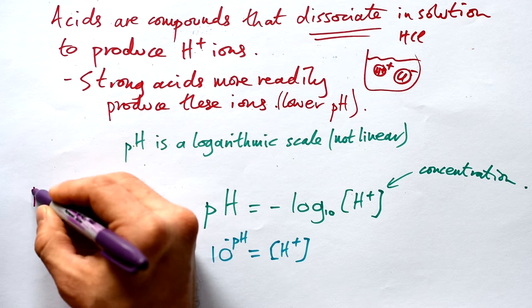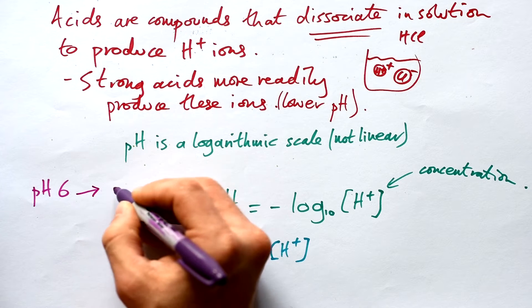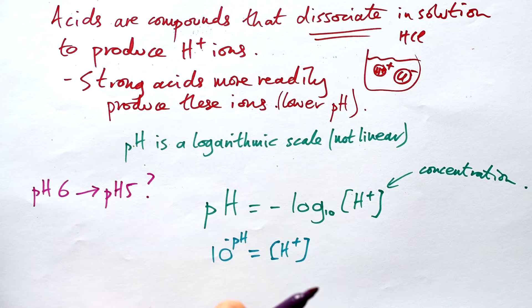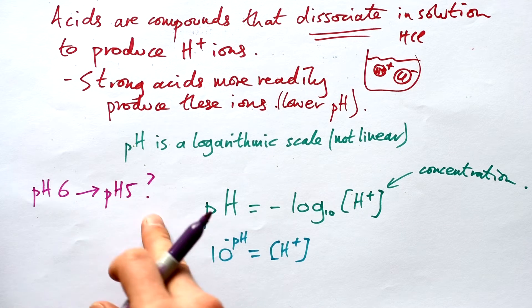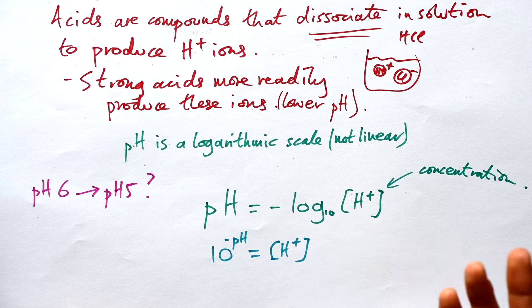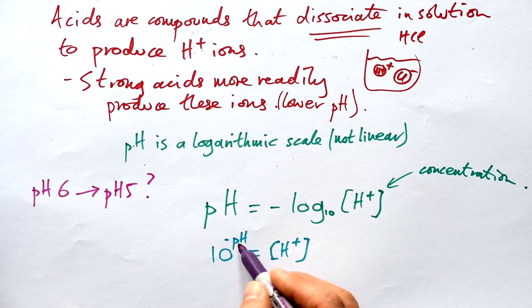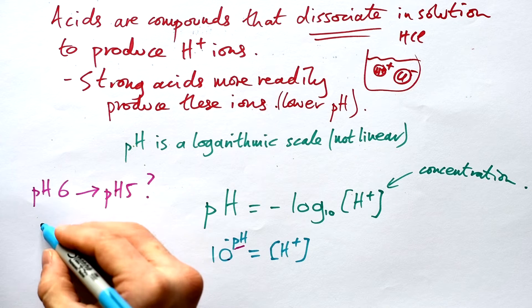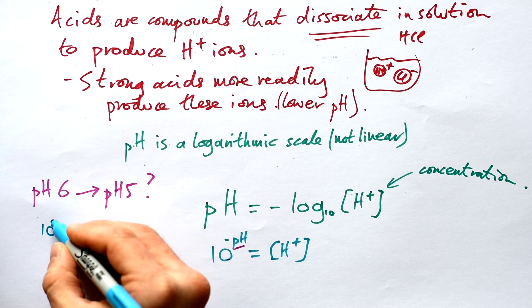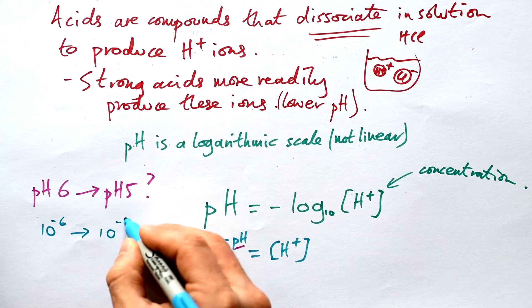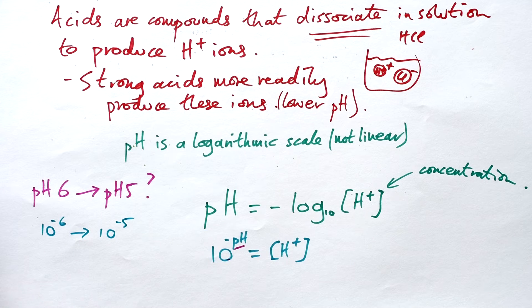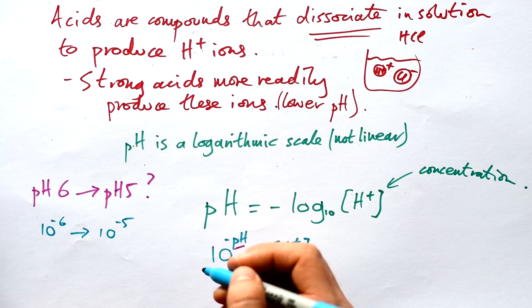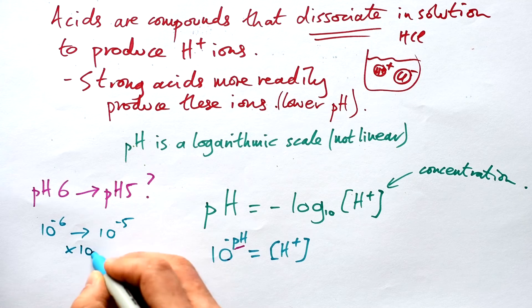What if we had something that was pH 6 and we wanted to make it pH 5? What would we have to do with the concentration of hydrogen ions to go from a pH of 6 to a pH of 5? It's not a matter of just taking away one or something like that. Because we know the pH is the power that we're timesing our 10 by, we're going from 10^-6 to 10^-5. What have we done to go from 10^-6 to 10^-5? We've actually timesed by 10.